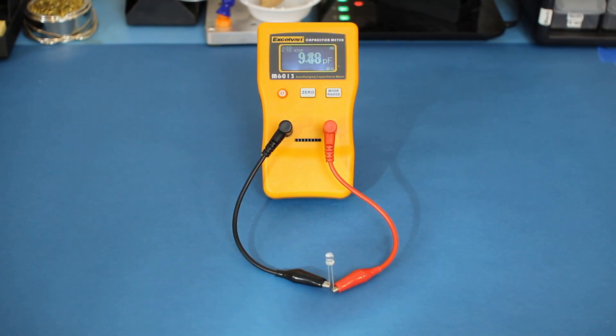I've connected my capacitance meter to this LED. As I shine light onto the LED, the capacitance of the P-N junction decreases. And when I remove the light, the capacitance value increases.